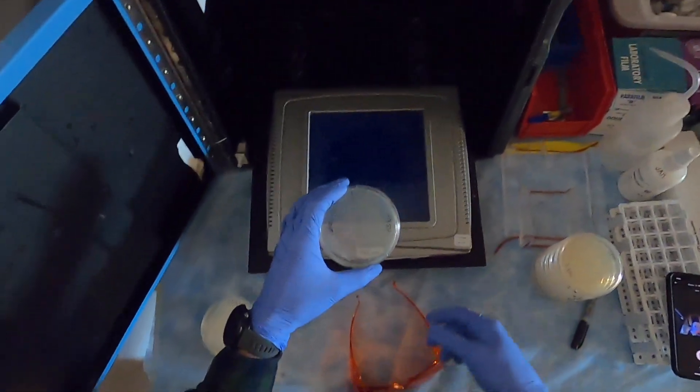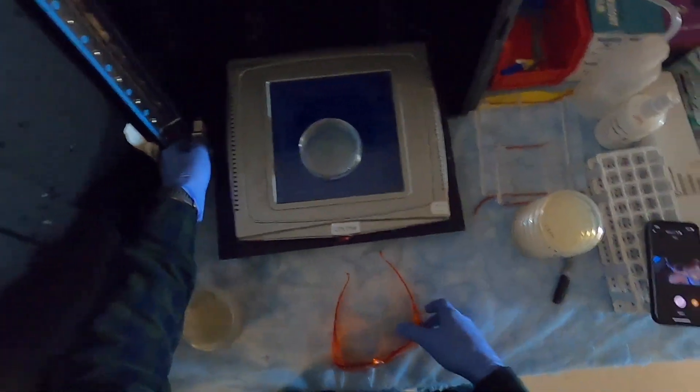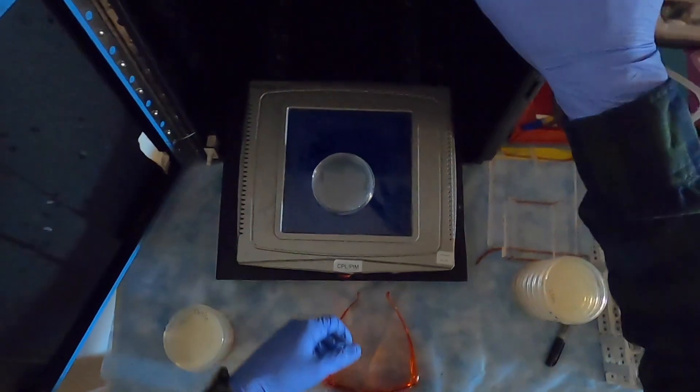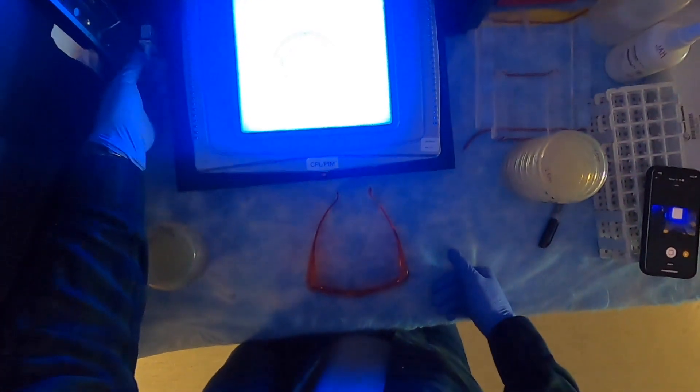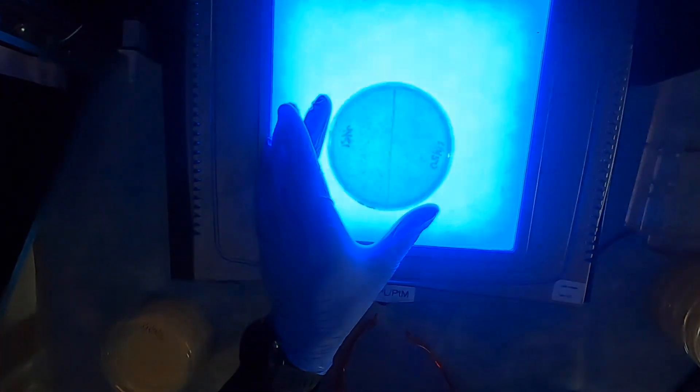To tell which colonies are white and green, we'll go over to this imager here that has this blue light which will excite the GFP. I'm turning that on just by pulling out this lever here and hitting this button up here that turns on the blue LED. Let me actually put on the filter for you there.